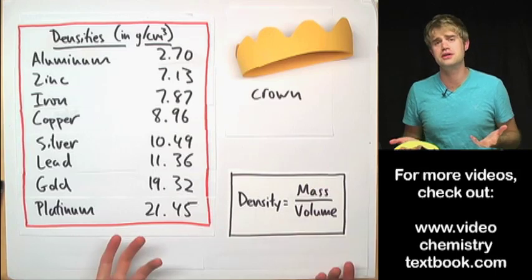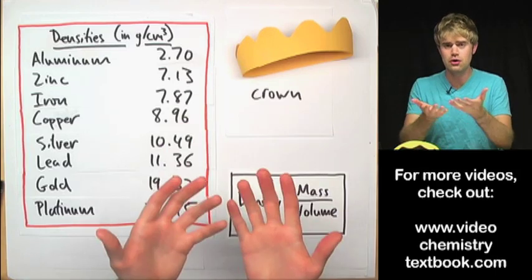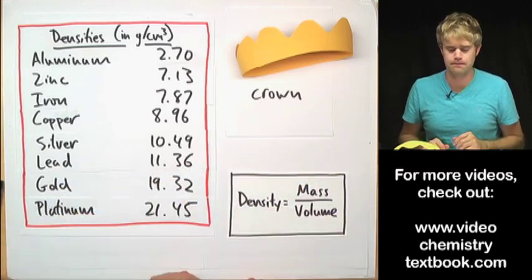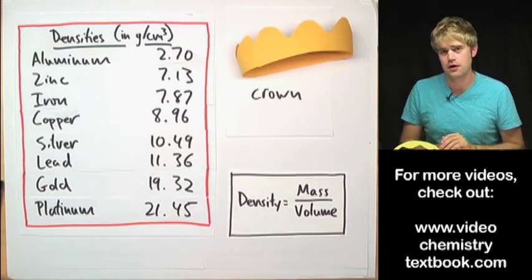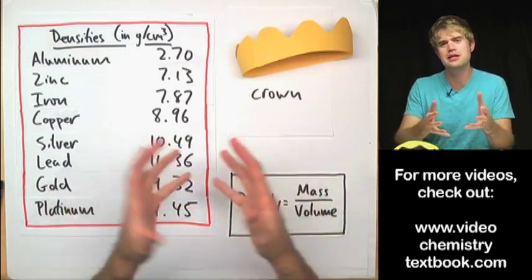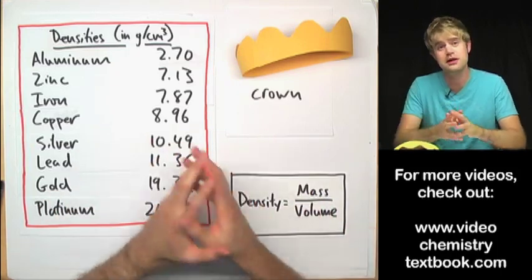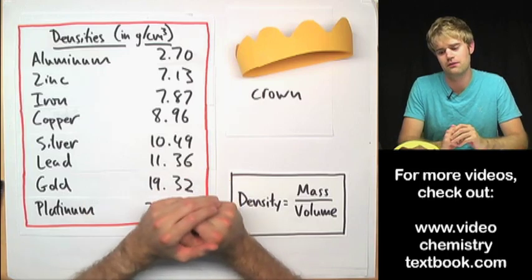Now, the mass is easy. That's how much the crown weighs. So all he's got to do is put the crown on a scale. The volume, the volume though is harder. The volume, the amount of space the crown takes up, that's hard to calculate.